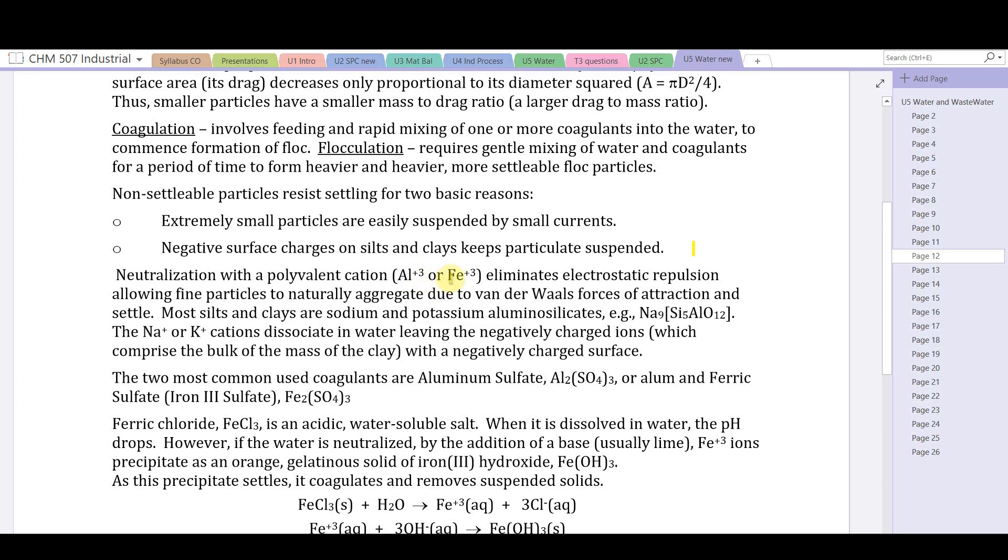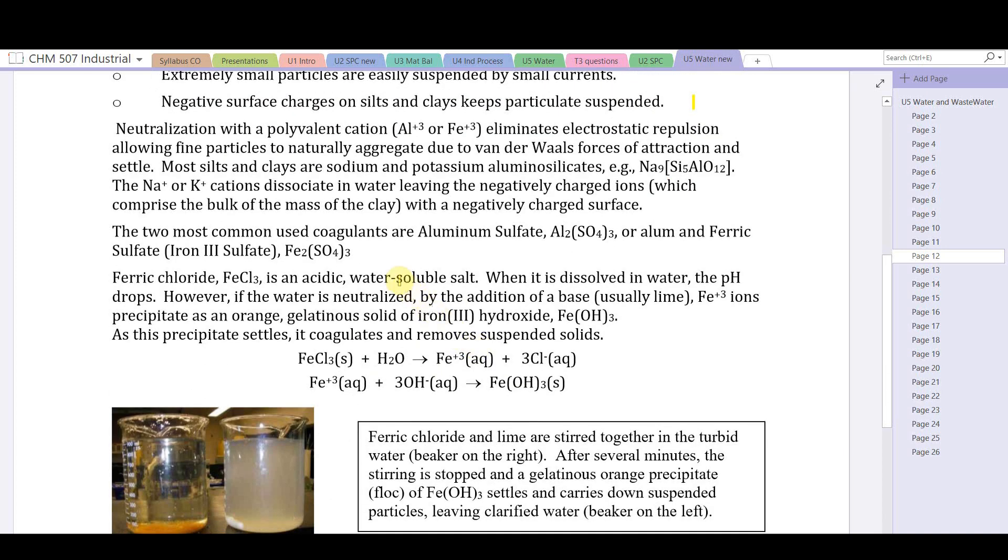Particles can't coagulate or agglomerate. However, neutralization with a polyvalent cation such as aluminum +3 or iron +3 will eliminate or neutralize electrostatic repulsion, allowing fine particles to naturally aggregate due to van der Waals forces of attraction and settle. Most silts and clays are sodium and potassium aluminosilicates. The sodium and/or potassium ions on the surface dissociate in water, leaving the negatively charged ions which comprise the bulk of the mass of clay with a negatively charged surface.